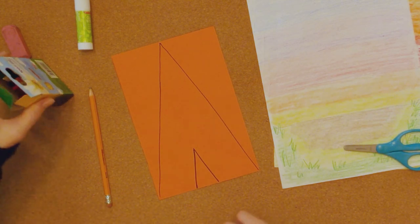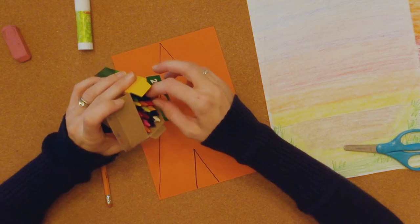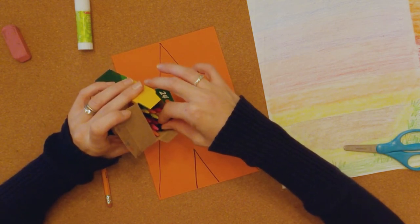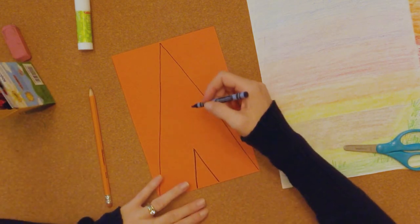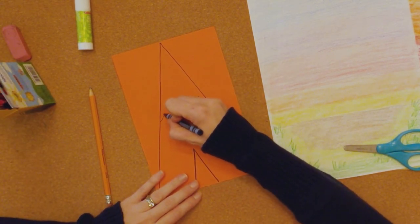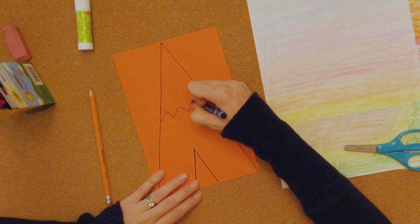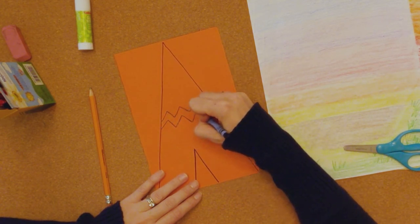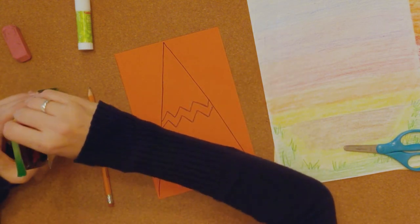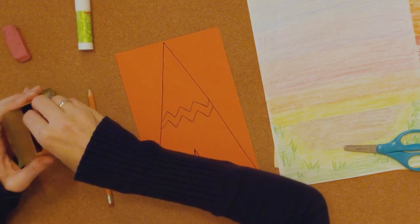All right, now get your crayons out, choose any color you want, probably a darker color so it shows up. And we can think about those lines we've talked about. So maybe you want to do a zigzag line. And let's just put some designs on it. So maybe the people who live in this teepee have tried to decorate it and make it fancy.